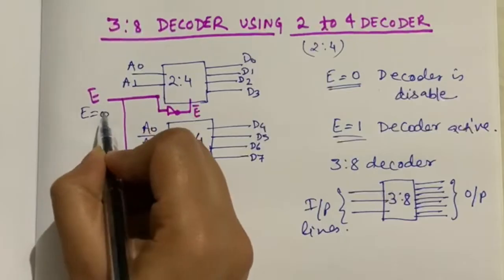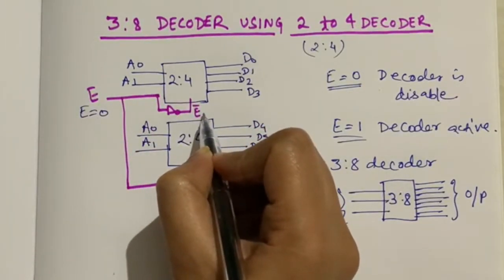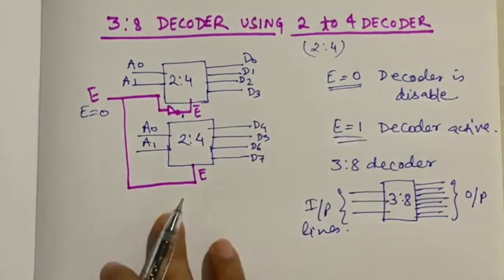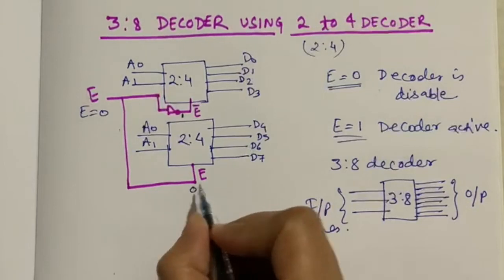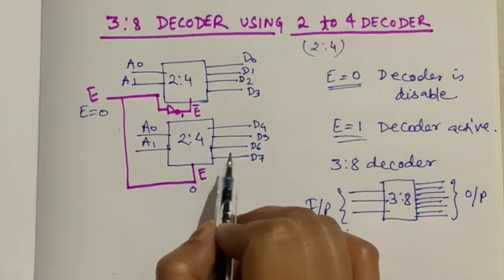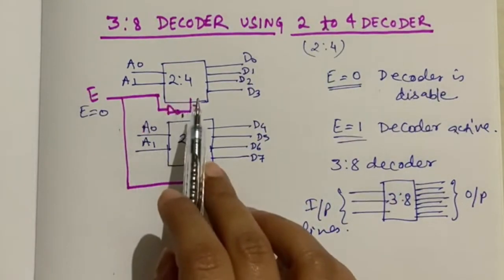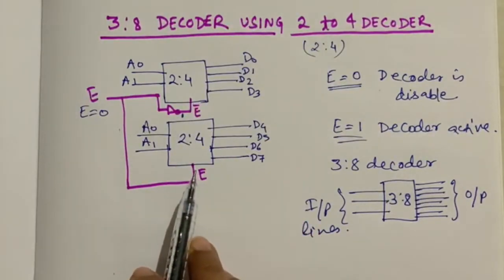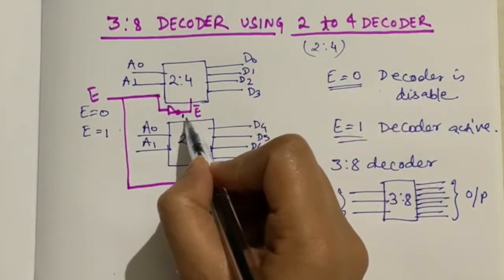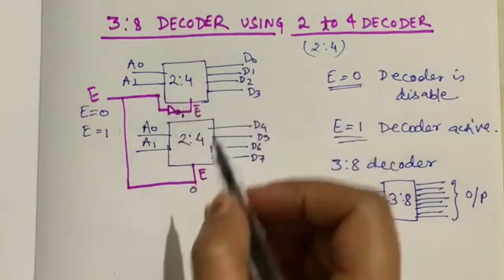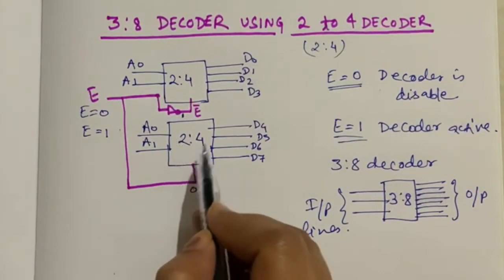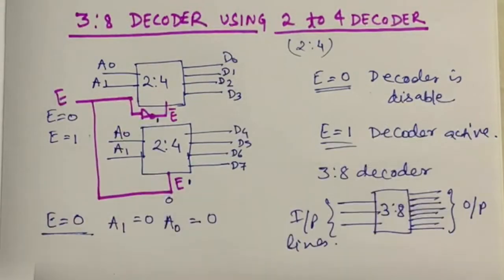When E equals 0, after negation it becomes 1 at the first decoder's enable, so the first decoder is active. The second decoder receives 0 directly and is disabled. When E equals 1, the first decoder gets 0 after negation and is disabled, while the second decoder becomes active.